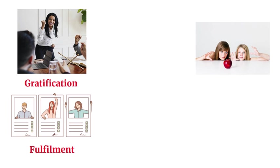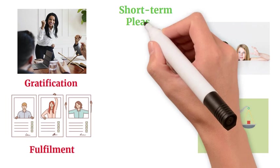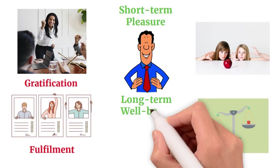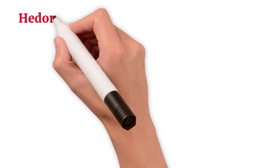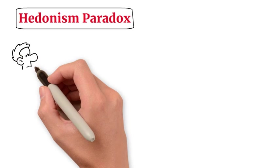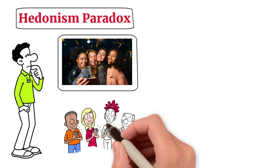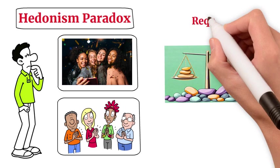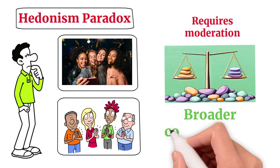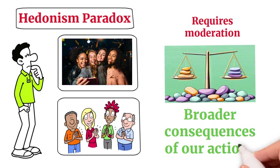It highlights the complexity of human desires and the inherent trade-offs between short-term pleasure and long-term well-being. Ultimately, the Hedonism Paradox challenges individuals to seek a balance between pursuing pleasure and sustainable happiness, recognizing that true fulfillment often requires moderation and consideration of the broader consequences of our actions.